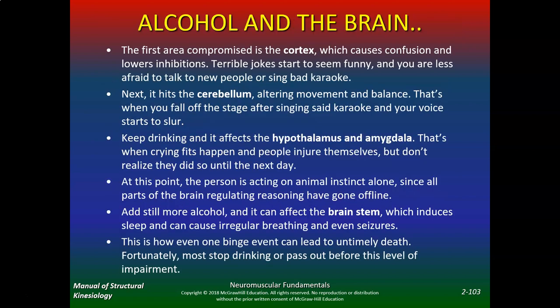To fully comprehend how the brain works, let's relate it to something reliable like alcohol. The first area of compromise is the cortex — the highest level of control. With one drink per hour, that's what is affected first: it causes a little confusion, lowers your inhibitions, your terrible jokes start to seem funny, and you're less afraid to talk to new people or sing bad karaoke.